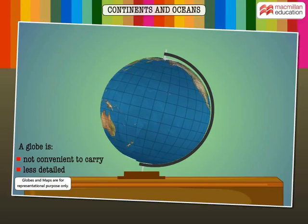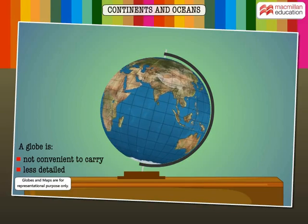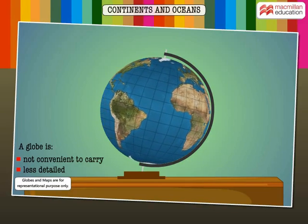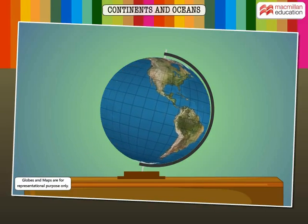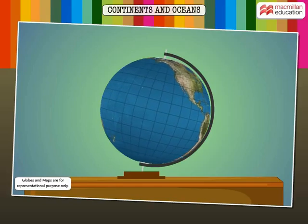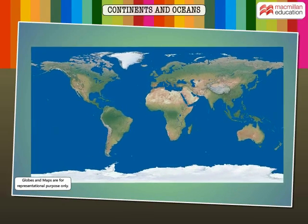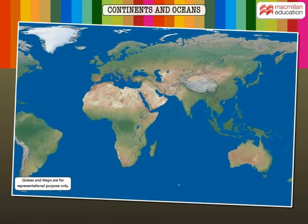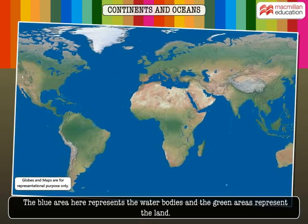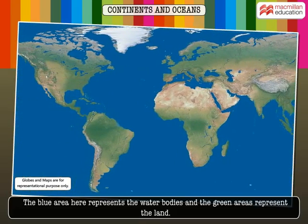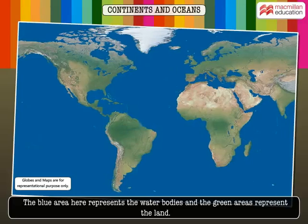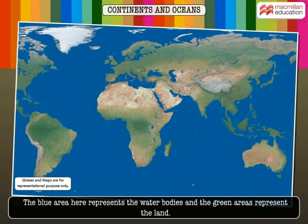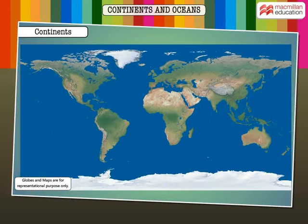A globe, however, is not convenient to carry and has less details. Thus, we flatten the globe to get a map. The blue area represents the water bodies and the green area represents the land.